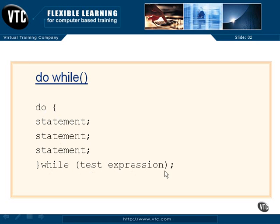Here's our test expression at the end of the DO WHILE. So all of these statements are performed first, then the expression is evaluated. If this test expression returns true, as we know non-zero, then the statements are performed again. And then the test expression is evaluated again.